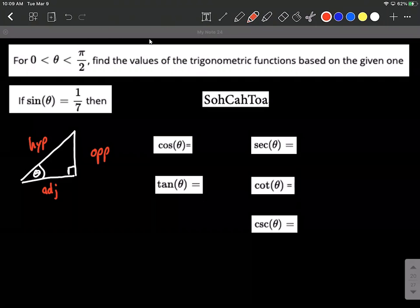Now if we want to put the 1 over 7 into this triangle, sine based on SOHCAHTOA is going to be opposite over hypotenuse. So we can say that 1 goes on the opposite side, and 7 is going to be the hypotenuse side.